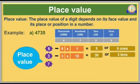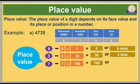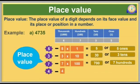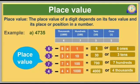The digit 7 is in the 100's place. The face value of digit 7 is 7 and the value of the 100's place is 100. Therefore, the place value of 7 is 7 × 100 = 700. The digit 4 is in the 1000's place. The face value of digit 4 is 4 and the value of the 1000's place is 1000. Therefore, the place value of 4 is 4 × 1000 = 4000.